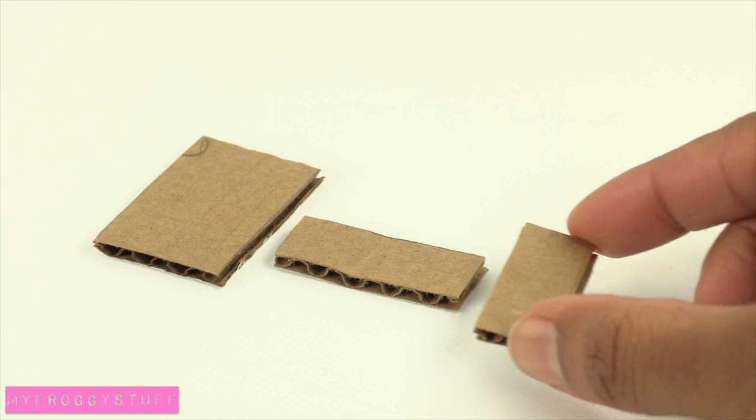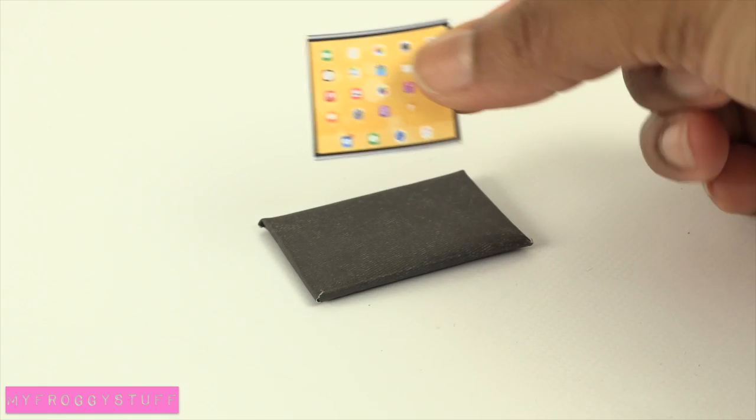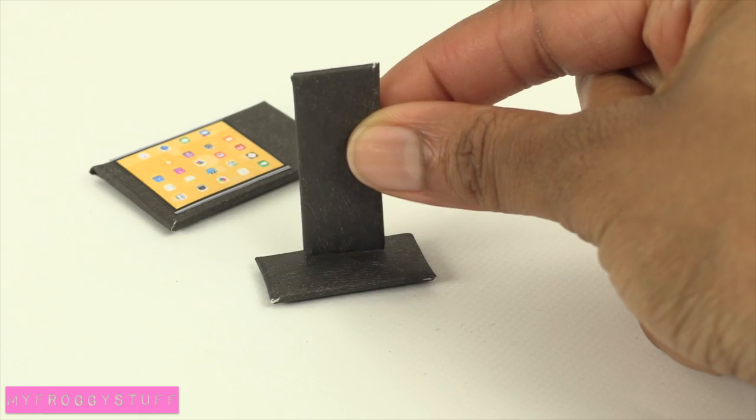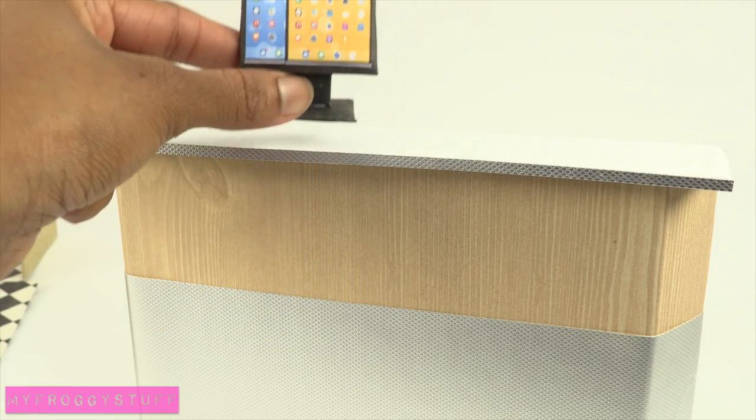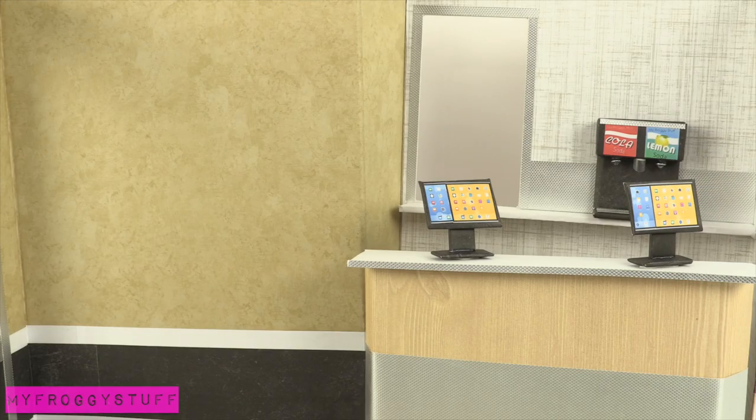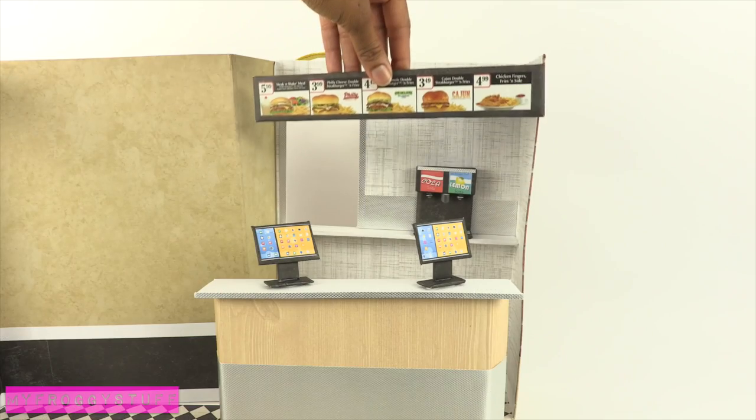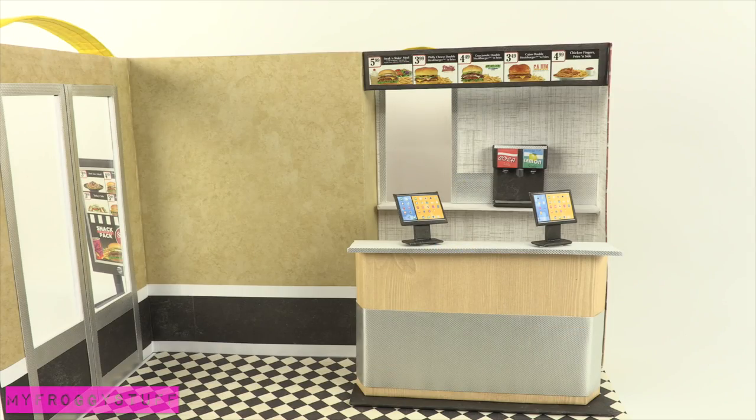Use scrapbook paper for decoration. Cut and cover three rectangles of cardboard. Glue a cutout of a computer screen onto the large rectangle. Glue the rectangles together to make cash registers and complete the counter. On a piece of covered cardboard, glue down more of the ads. Glue it across the top for the menu.